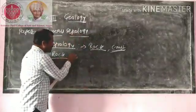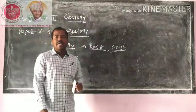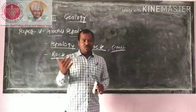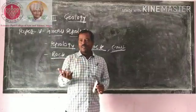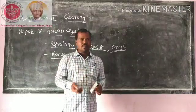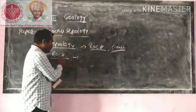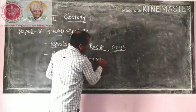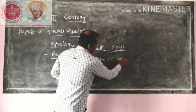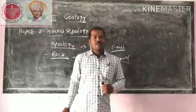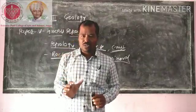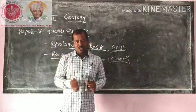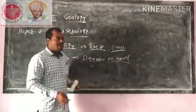What is the definition of rock? Rock is the aggregate of minerals. Last year we studied the definition of mineral and attended the mineralogy paper. The definition of rock relates to the definition of mineral — aggregates of mineral. Mineral is a naturally occurring inorganic substance which has a definite chemical composition and definite atomic structure.